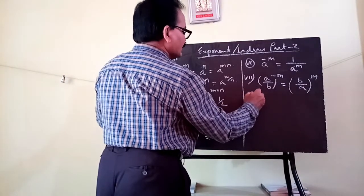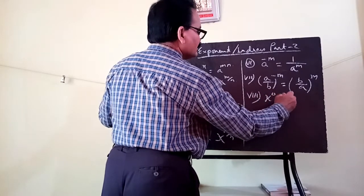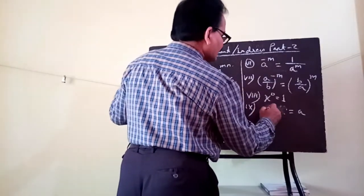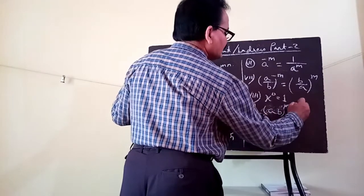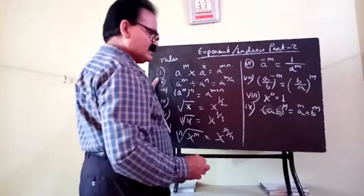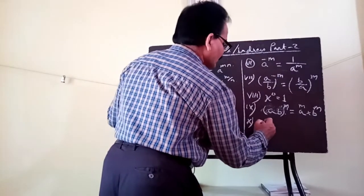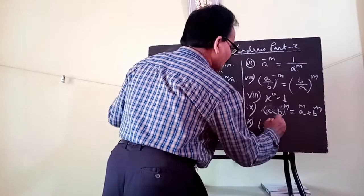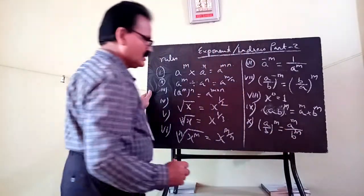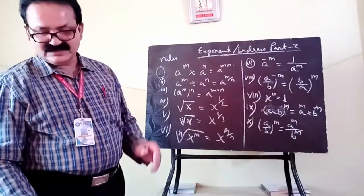We have also explained the zero exponent: x to the power 0 equals 1. Then another rule: if a b whole to the power m, this equals a to the power m into b to the power m — you can split it into two or more. And if a divided by b, whole to the power m, this can be written as a to the power m divided by b to the power m.